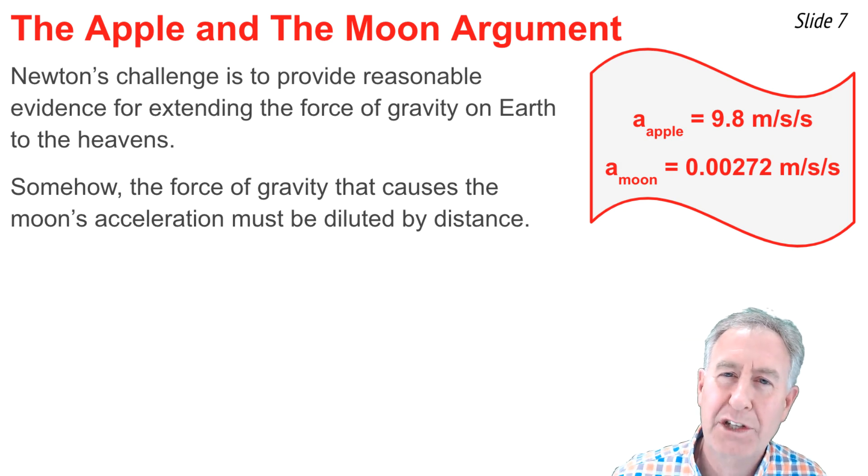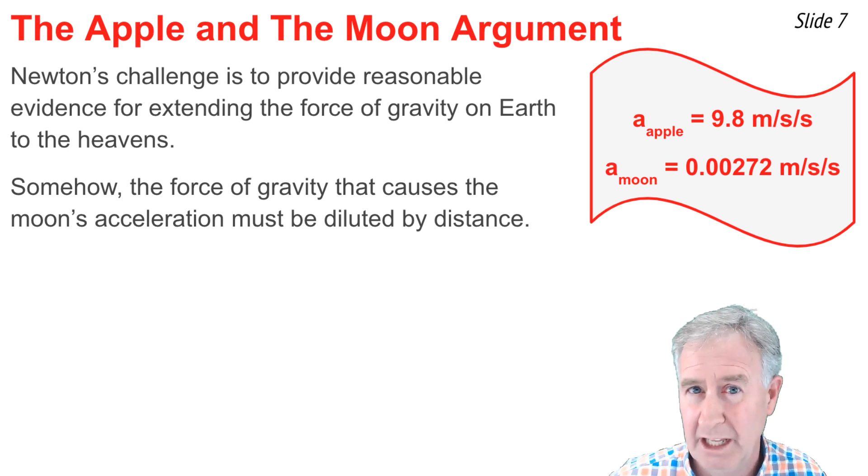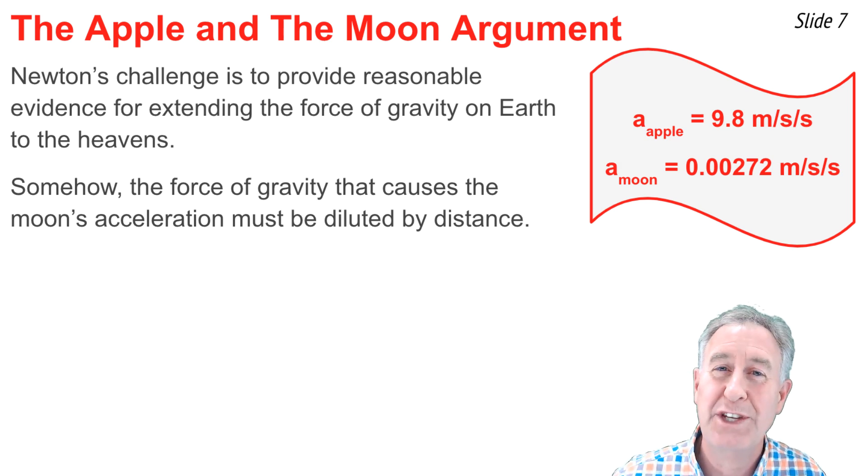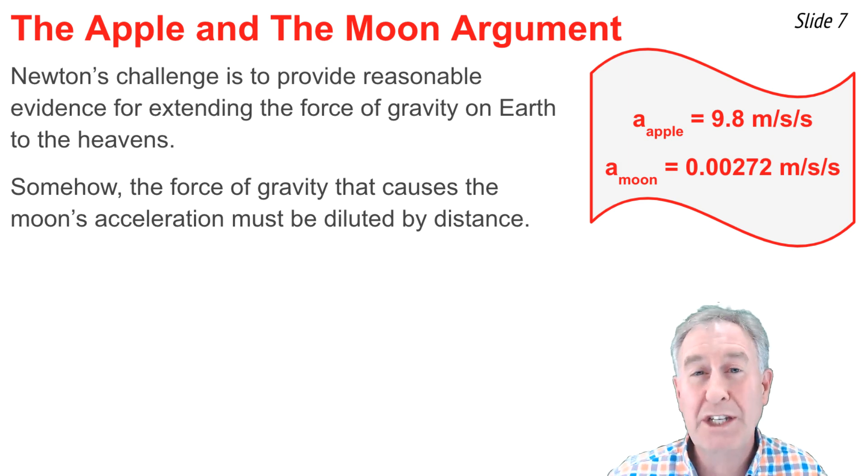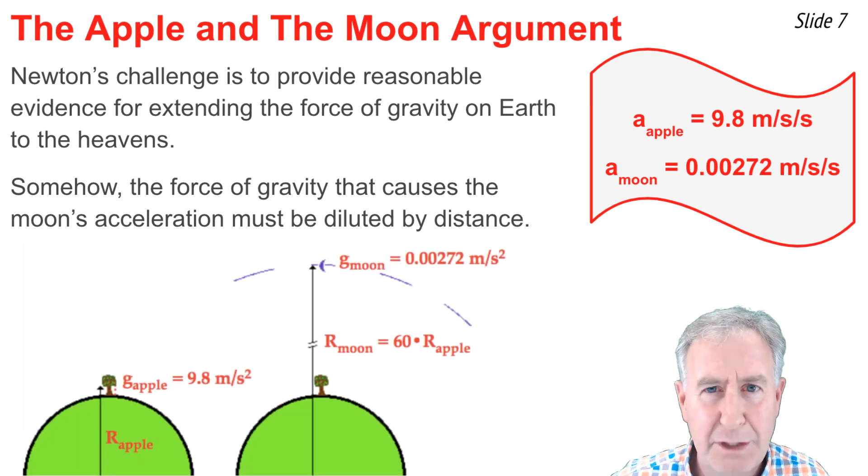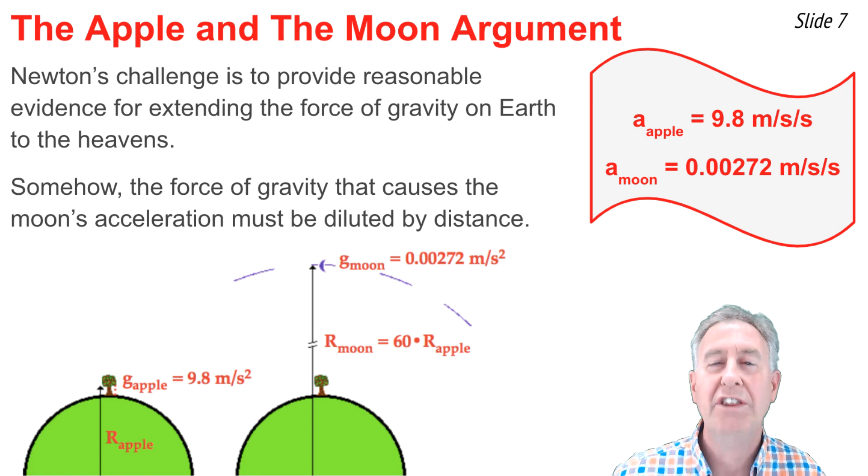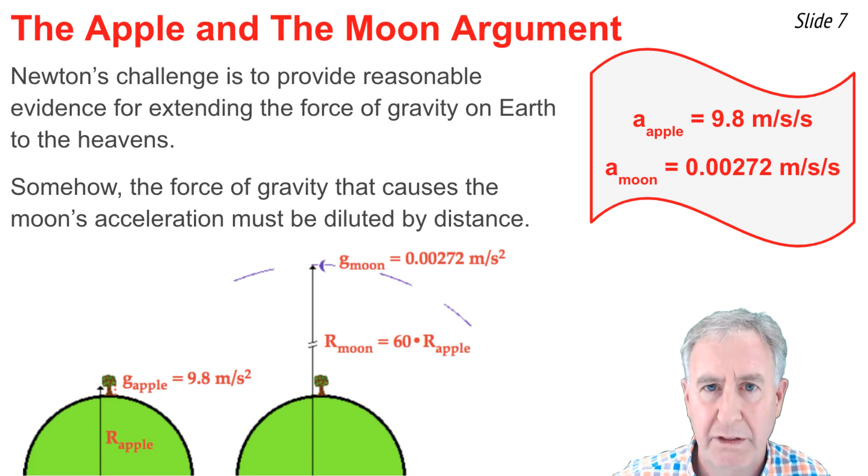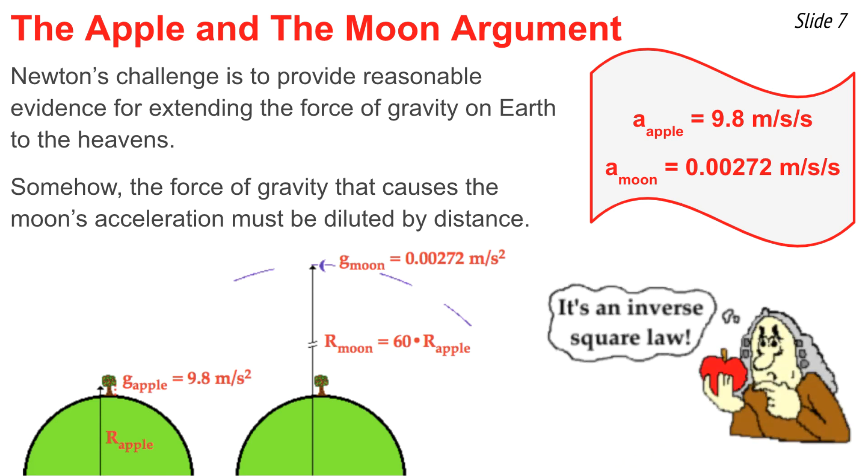What's the relationship? Well, it's not obvious to everybody what the relationship is, but then again, Newton isn't anybody. Newton looks at the numbers and realizes that the acceleration of the apple is 60 squared times larger than the acceleration of the moon. 60 squared, or 3,600 times larger. Well, what's that have to do with all this? Well, now, if you look at the distance from the center of the earth to the location of the apple, it's one radius of earth. And if you look at the distance from the center of the earth to the location of the moon, it's 60 times further. It's 60 earth radii. And there you have it. It's the inverse square law relationship.